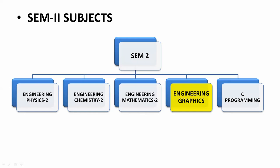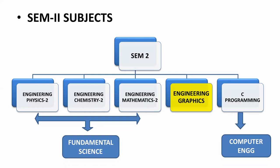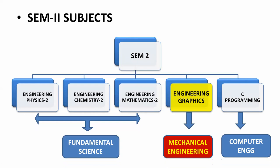For Semester Two we have Engineering Physics 2, Engineering Chemistry 2, and Engineering Mathematics 2 — again from fundamental science. Then there is a subject from the computer engineering department, C Programming, also from computer engineering, and Engineering Graphics, which is about engineering drawing, from mechanical engineering. Since first year is common for all branches, you have at least one subject from each branch — mechanical, computer, electrical, and electronics.